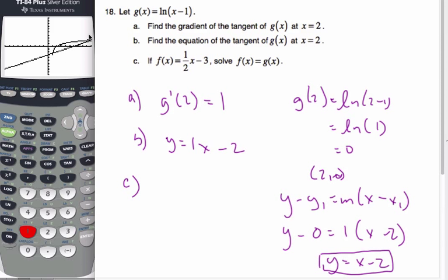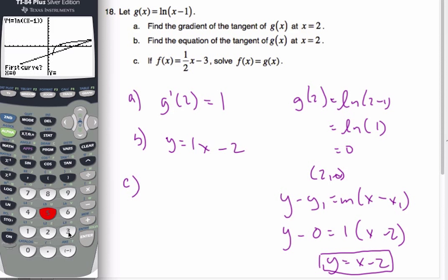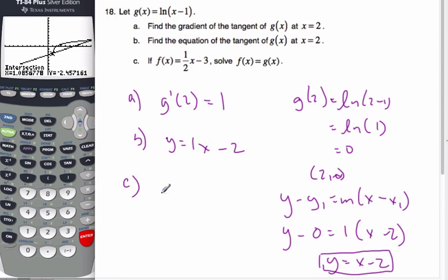I can see there's two points. So I'm going to find the first one. Intersect, first curve, second curve, and it's close to this value here. So the first answer is x equals 1.09.